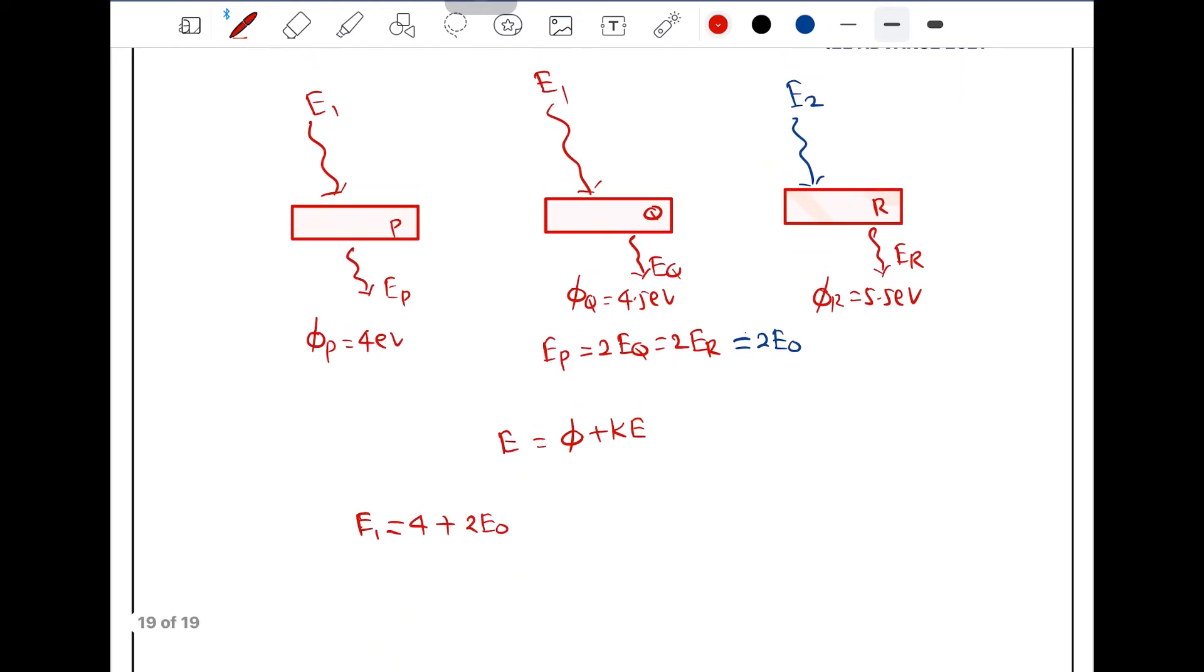For metal Q, you can write E1 is equal to 4.5 plus E0. And for metal 3, that is R, E2 is equal to 5.5 plus E0.